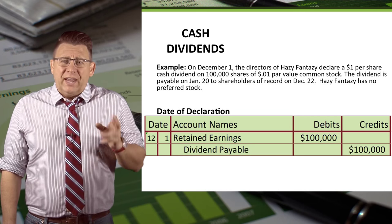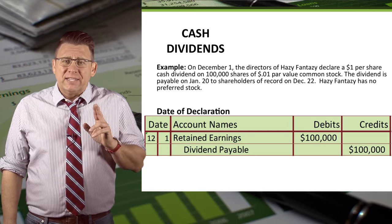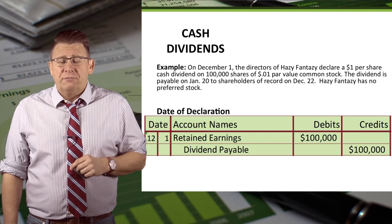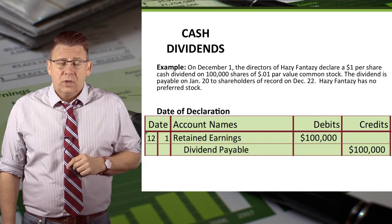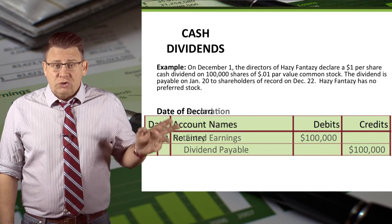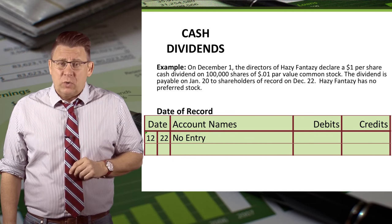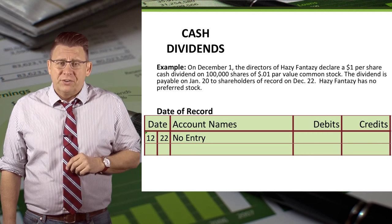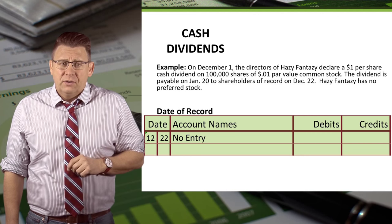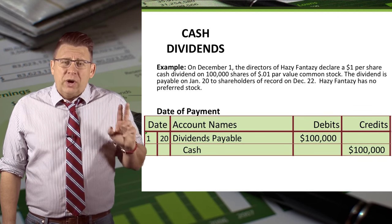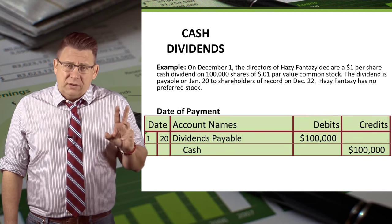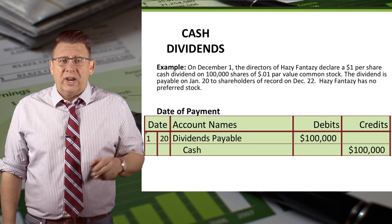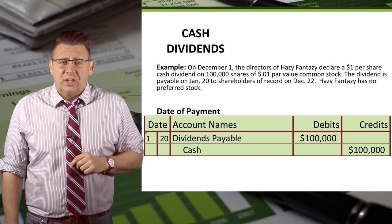On December 1, retained earnings is debited and dividends payable is credited for $100,000. No journal entry is recorded on December 22nd, as none is required for the date of record. On January 20th, dividends payable is debited and cash is credited for $100,000.